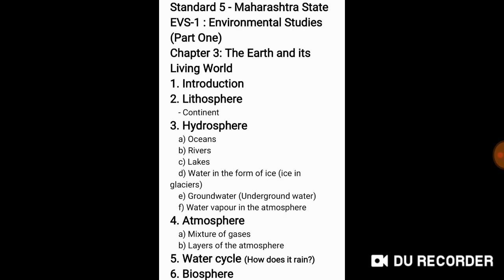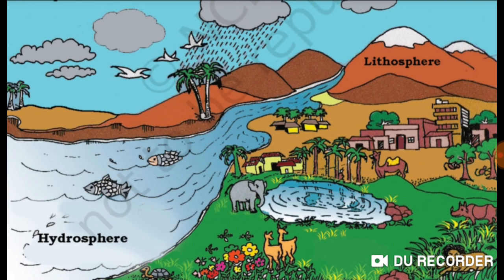In this video we'll be covering the first topic, that is introduction. In the coming videos we'll be covering the other topics also. The surface of the earth is a complex zone in which three main components of the environment meet, overlap and interact.